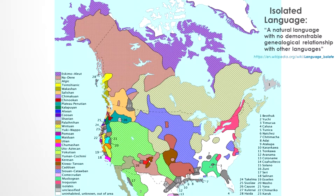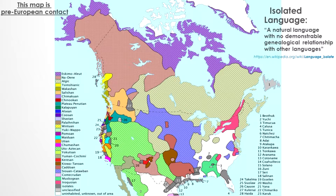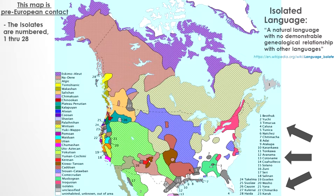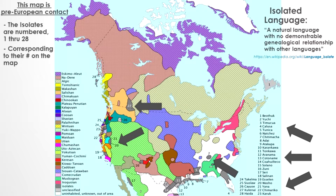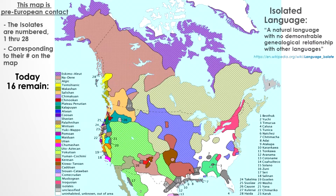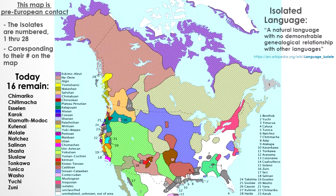What is an isolated language? Simply stated, it is a natural language with no demonstrable genetic relationship with other languages. That is to say, it is one that has not been demonstrated to descend from an ancestor common with any other language. Language isolates are, in effect, language families consisting of a single language.